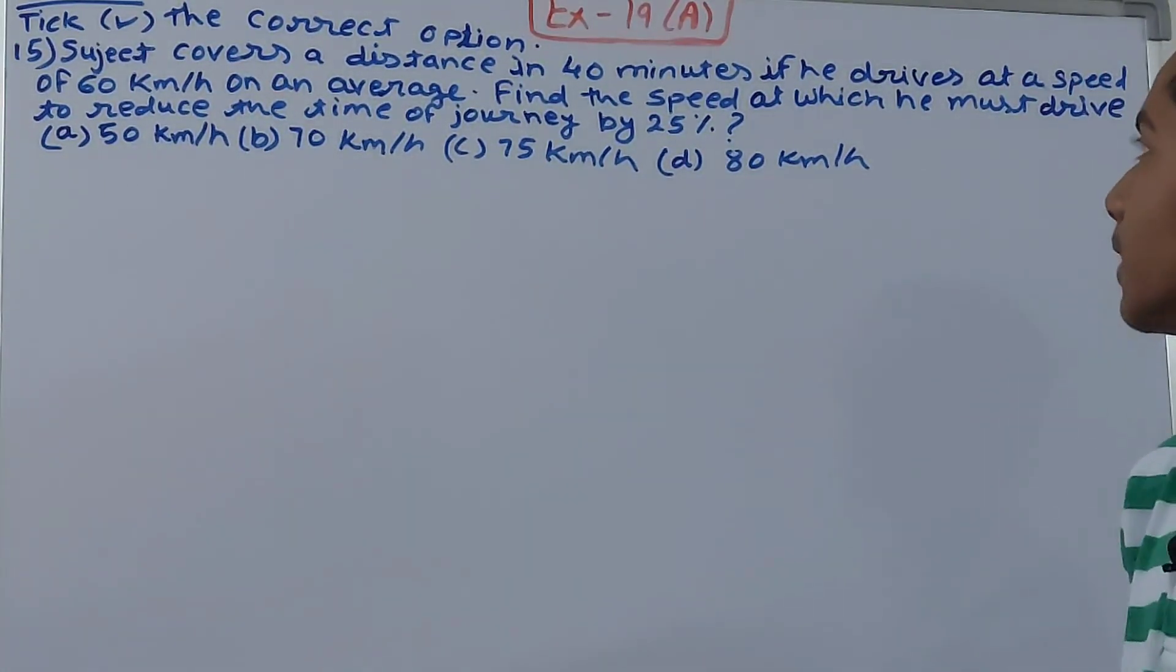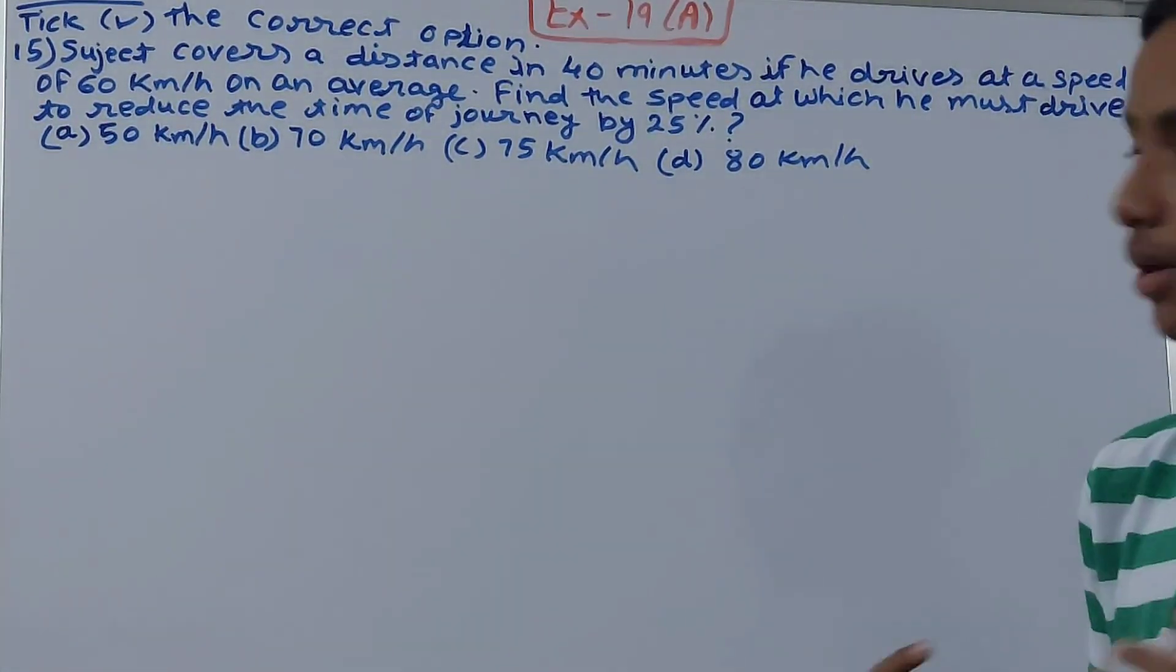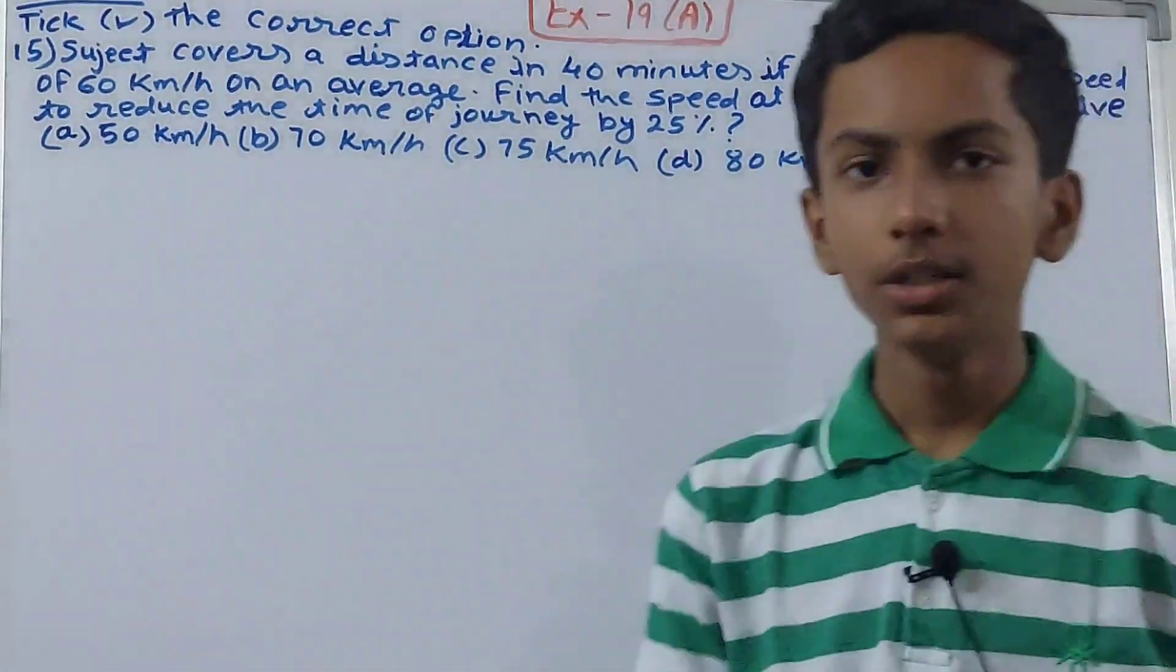if he drives at a speed of 60 km per hour on an average. Then find the speed at which he must drive to reduce the time of the journey by 25%.